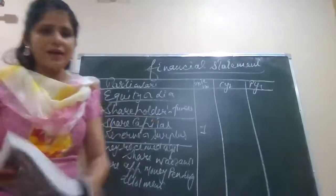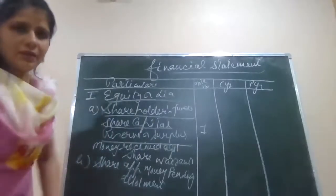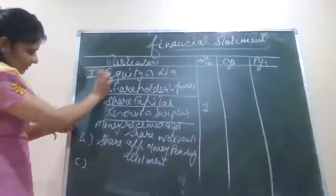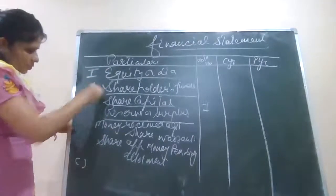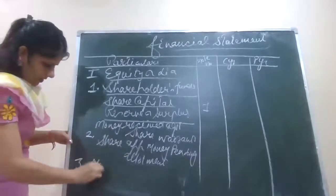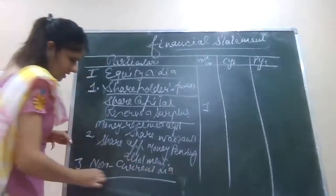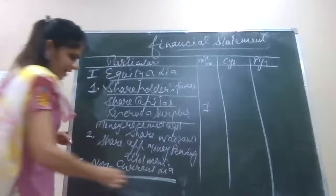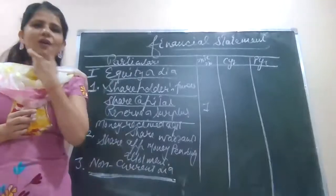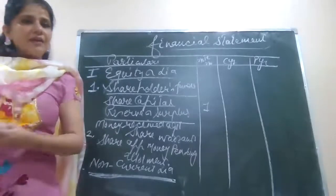That is the third main head — non-current liabilities. So third main head, which I call C: this is one, this is two, this is three. Under the third part I will keep writing non-current liabilities. Non-current liabilities are those liabilities which are long-term liabilities — for example, bank loans. We have a huge list of it.